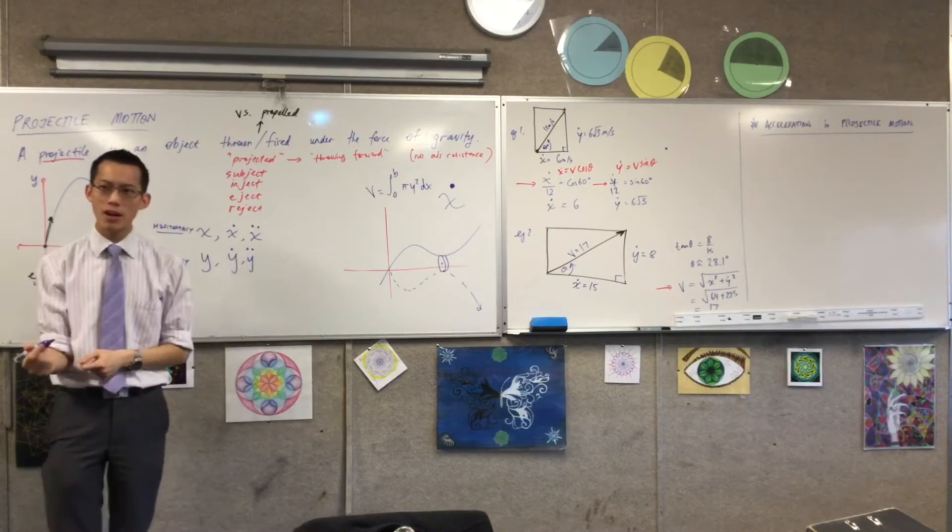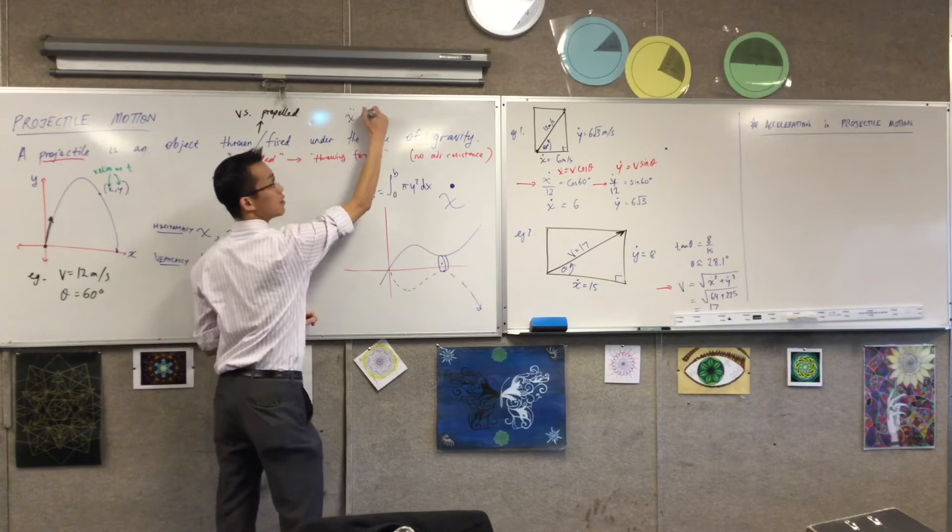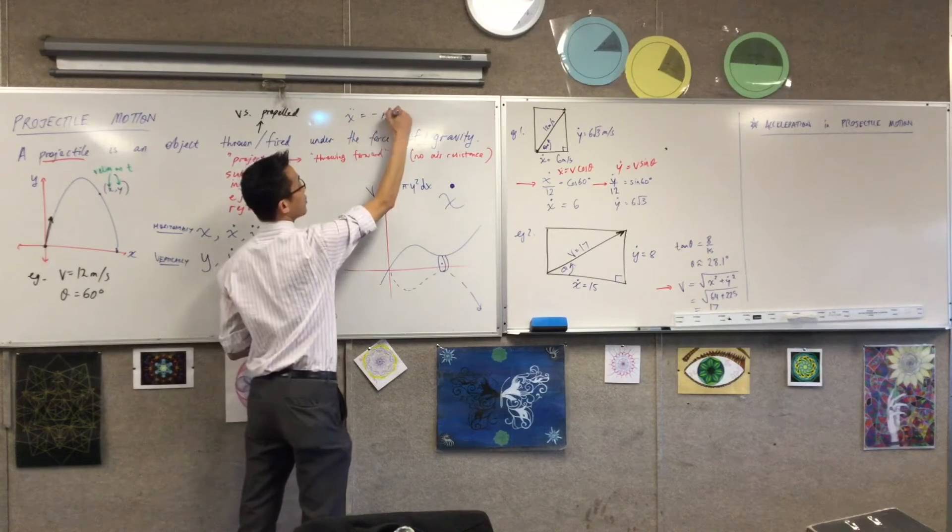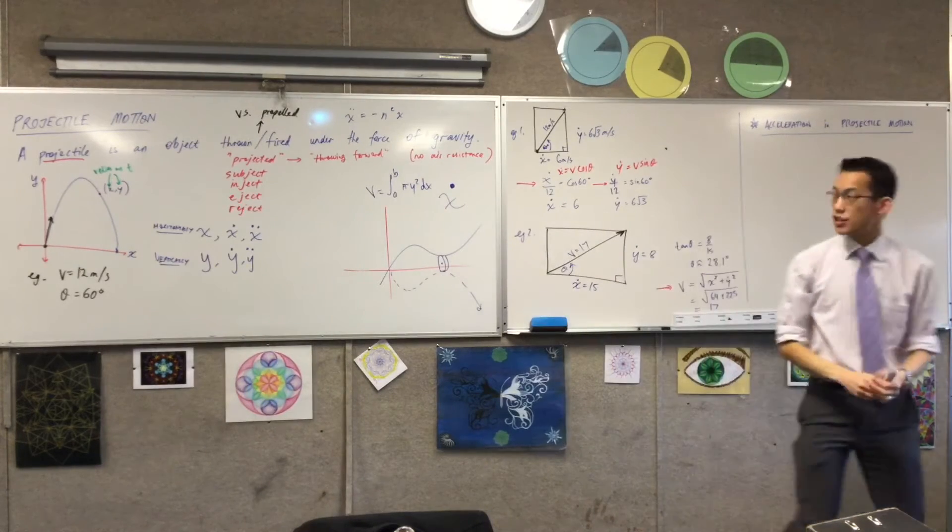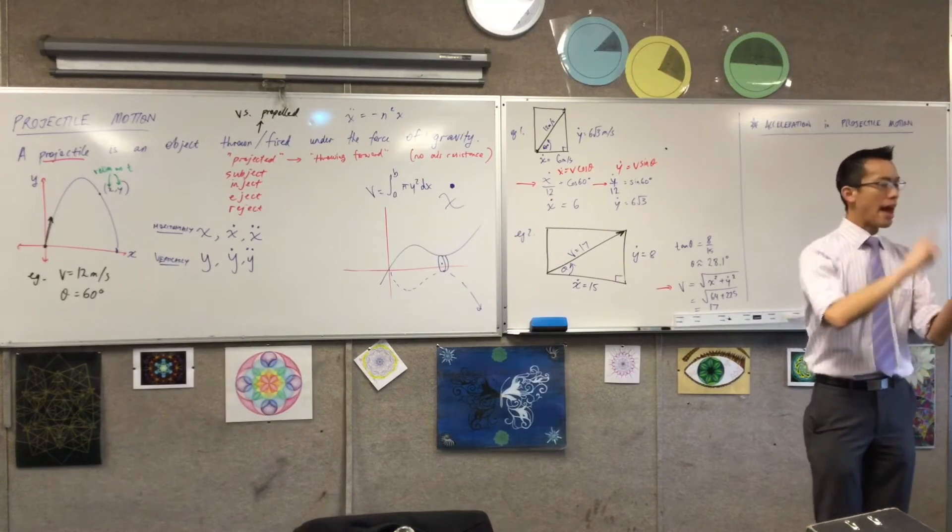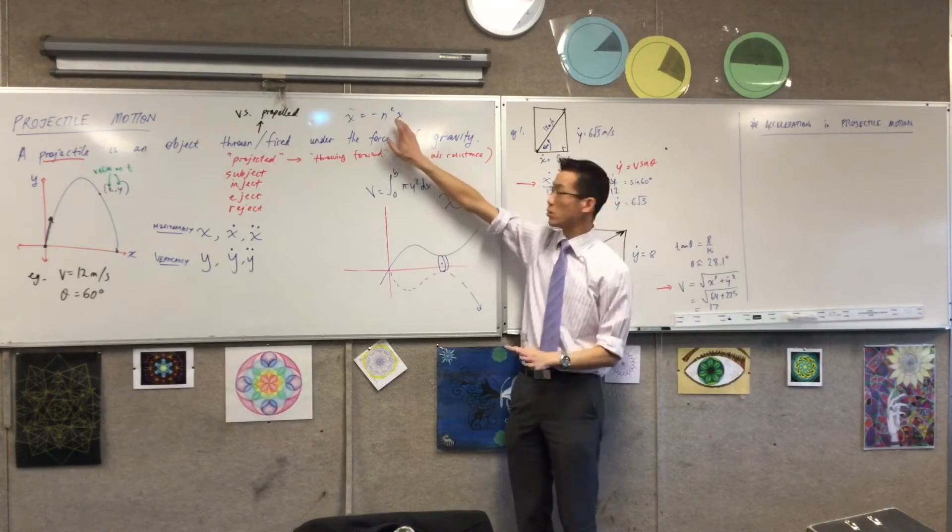Don't write this down, but what was that equation? Very simple. X double dot is equal to what? Yeah, very good. Minus or negative n squared x, right? So in other words, your acceleration is proportional to and opposite whatever your displacement is. So this was crucial.